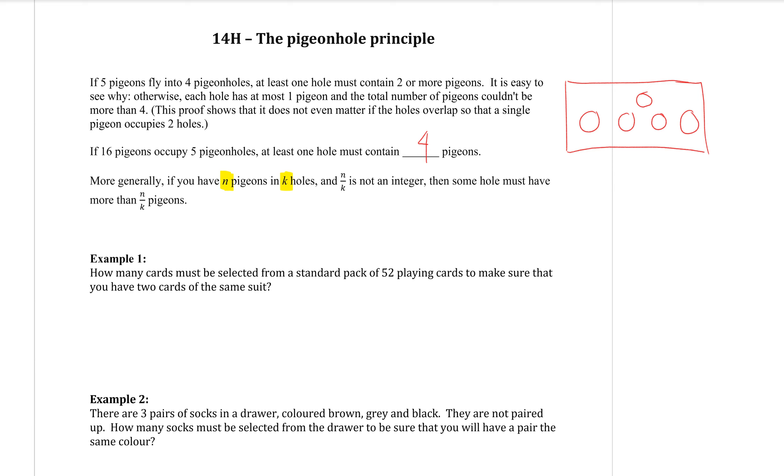Then all we need to do is go n divided by k. So for this 16 pigeon example, if I go 16 divided by 5, because I had five pigeon holes, it gives me 3.2. That means that each hole would have to have three pigeons going into it, but that 0.2, as soon as you have that decimal place there, it means that there's at least one pigeon that's going to have to go to make a fourth into one of those holes. So you always round up. So therefore, at least one hole must have four pigeons.